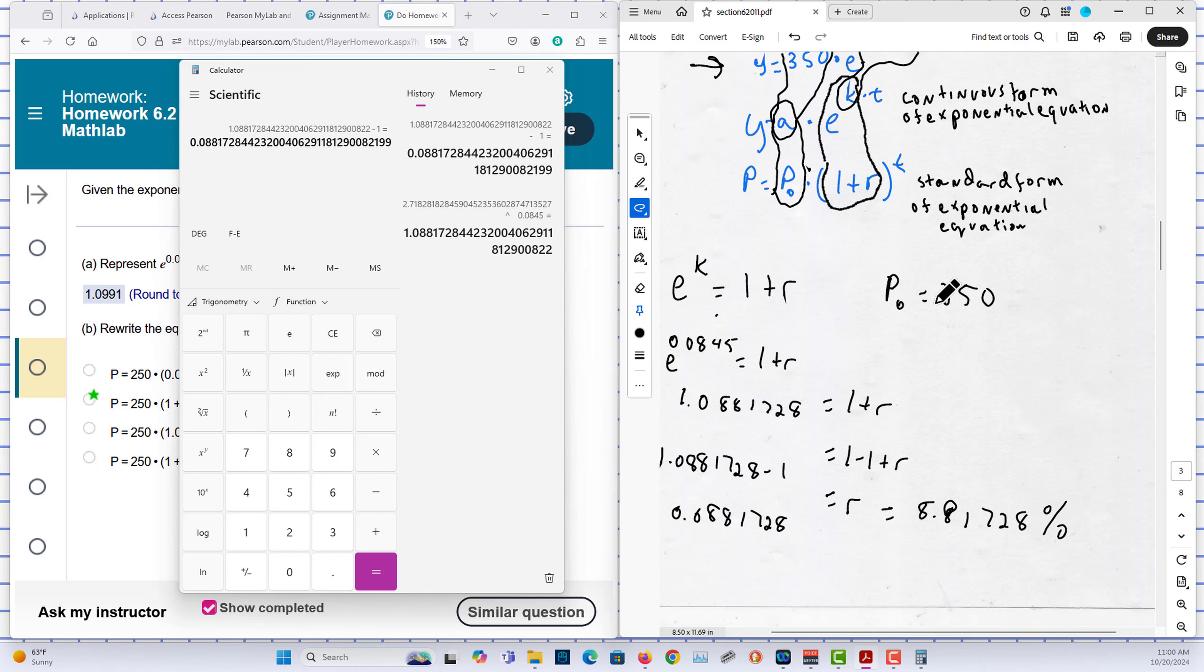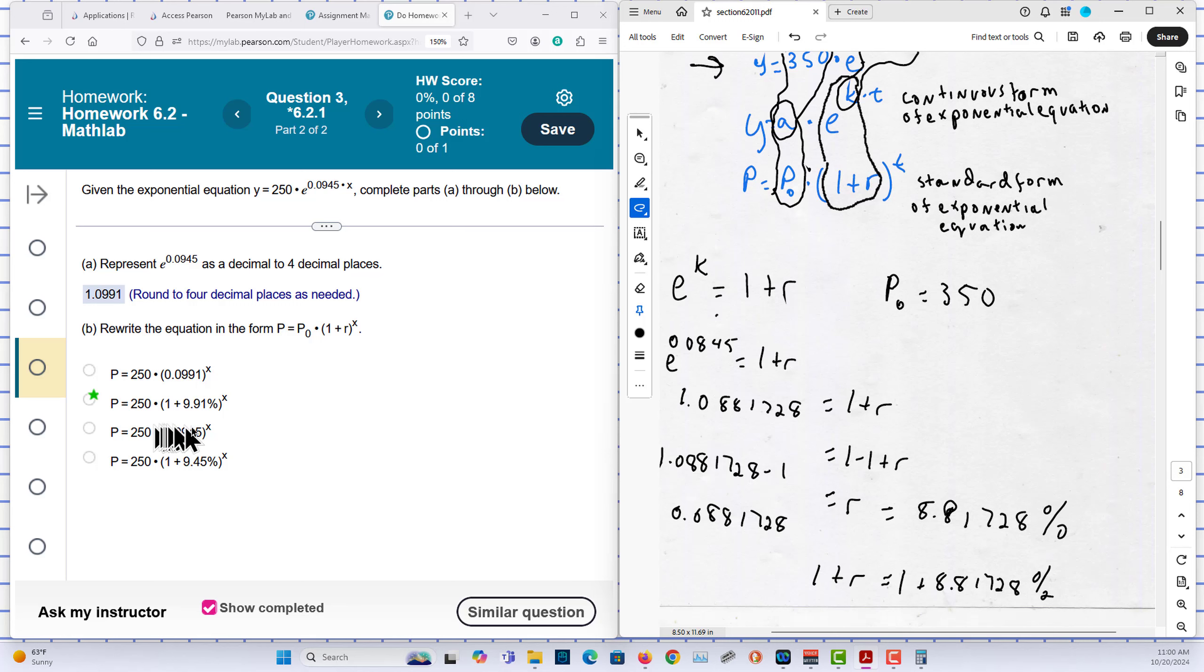You know what P0 is. And that would mean that 1 plus R is equal to 1 plus 8.81728%. That's what 1 plus R is. So we've got to get it into that form.